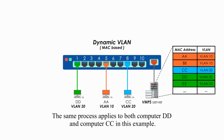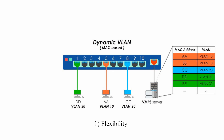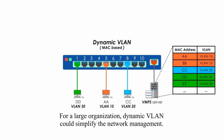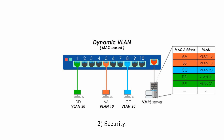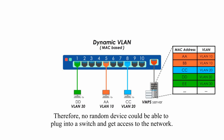The same process applies to both computer BB and computer CC in this example. Dynamic VLAN has at least two advantages compared with static VLAN. One, flexibility — with dynamic VLAN, we can control devices on a central server instead of configuring each individual port of all switches. For a large organization, dynamic VLAN could simplify network management. Two, security — with dynamic VLAN, each device connected to a switch is checked against the server database for its membership. Therefore, no random device could plug into a switch and get access to the network.